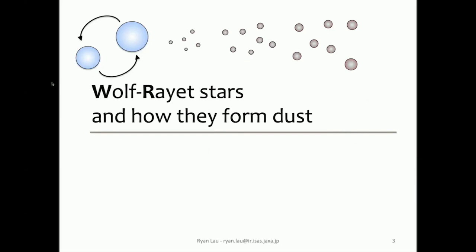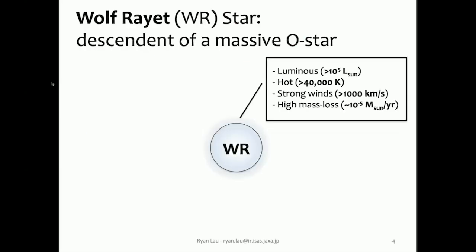Wolf-Rayet stars and how they form dust. So this is a Wolf-Rayet star. These are descendants of massive O stars — the post-main sequence phase of these massive stars. We're pretty much looking at the exposed helium core after episodes of mass loss. Wolf-Rayet stars are characterized by very high luminosities greater than 10^5 solar luminosities, very hot effective temperatures, strong winds, and extremely high mass loss rates. When you look at all of these characteristics, you wouldn't necessarily think these types of stars are very good dust formers. But some of them actually are, which is quite surprising.